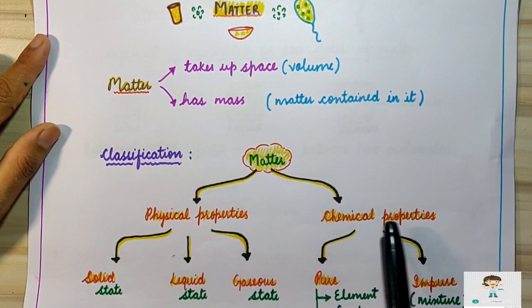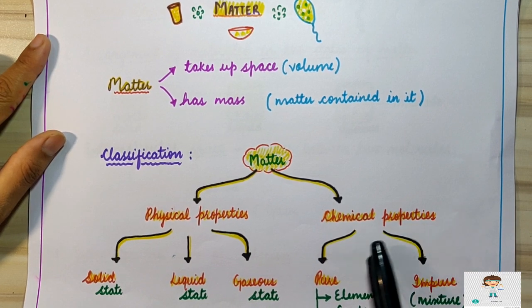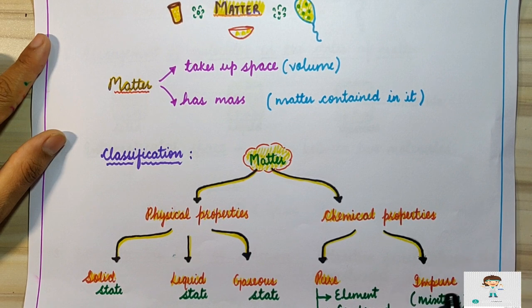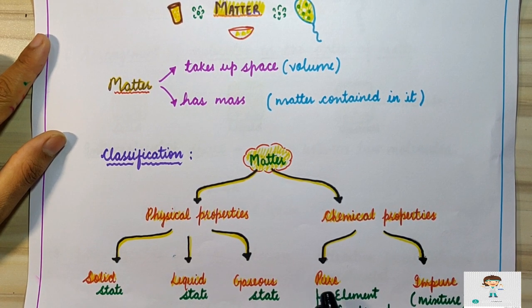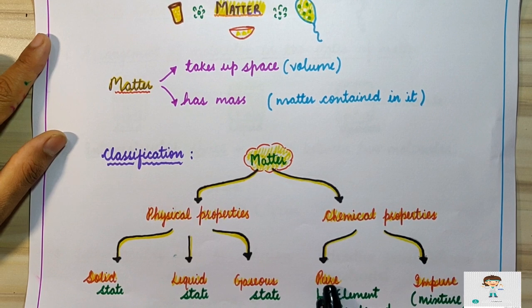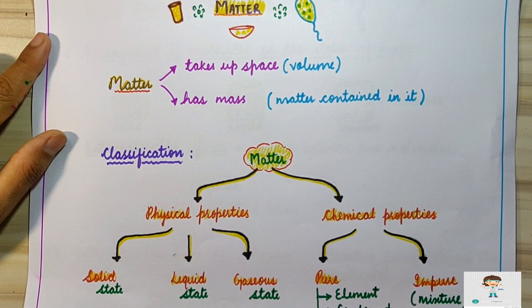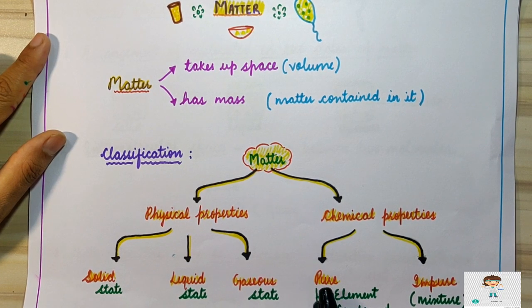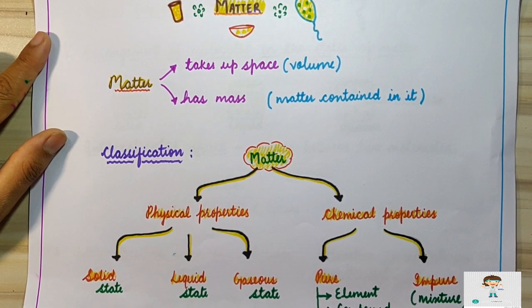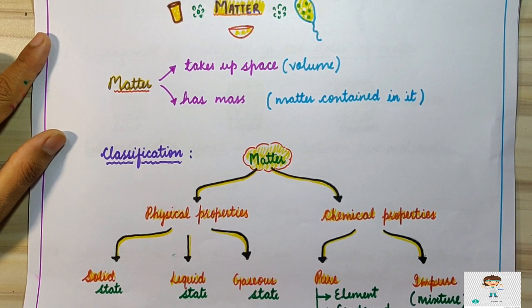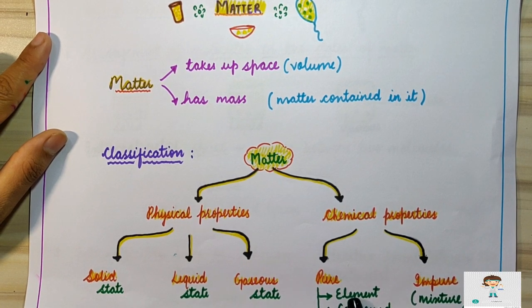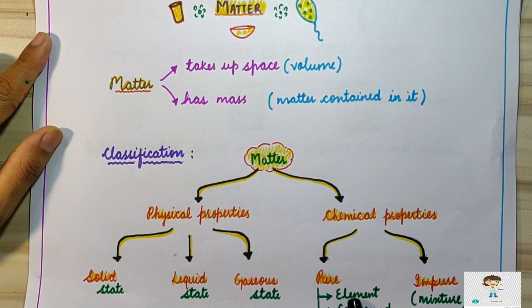On the basis of chemical properties, matter can be classified into two types: pure substance and impure substance. A pure substance is made up of only one kind of matter — if it has atoms, they will all be the same type, and if it has molecules, they will all be the same type. For example, iron contains only the same type of iron atoms, so it is a pure substance.